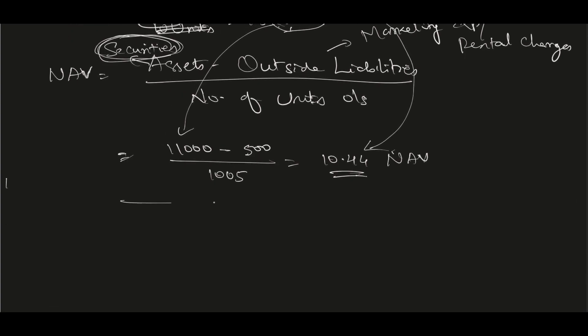Now next day, again same formula. This time the 11,000, imagine it has come down because it's not necessary that every day the securities value will go up. So it goes to, let's say, 10,900 minus 500 in liabilities.